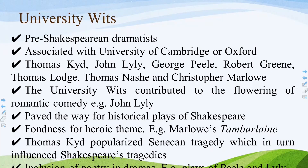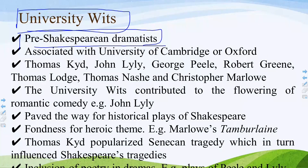University Wits — what exactly does it mean? First, keep in mind they are pre-Shakespearean dramatists. University Wits includes Thomas Kyd, John Lyly, George Peele, Robert Greene, Thomas Lodge, Thomas Nashe, and Christopher Marlowe. All these writers were associated with either the University of Cambridge or the University of Oxford. The University Wits contributed to the flowering of romantic comedy. Thomas Kyd mainly popularized the Senecan tragedy through The Spanish Tragedy.